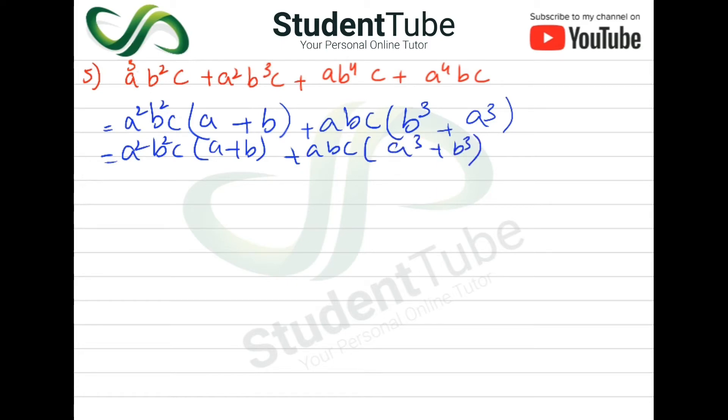Now here a formula will come, so here a³ + b³ = (a+b)(a² - ab + b²).